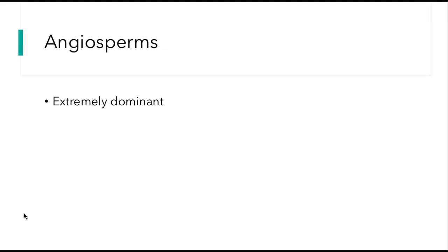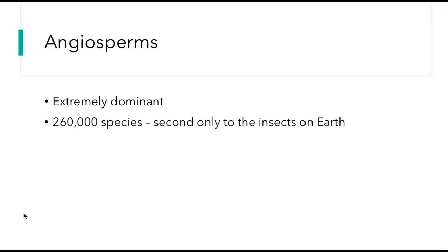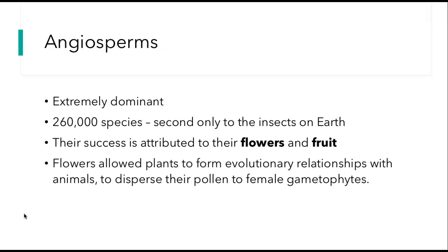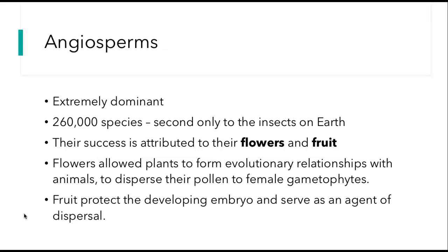Angiosperms are extremely dominant. We already talked about seed plants being able to get away from water sources and spread far and wide through their seeds, but the flowering plants even more so. There are 260,000 species of angiosperms — that's second only to the insects on earth. Their success is attributed to their flowers and their fruit. Flowers allow plants to form evolutionary relationships with animals, helping them disperse pollen to female gametophytes. Fruit protect the developing embryo and serve as an agent of dispersal as well.